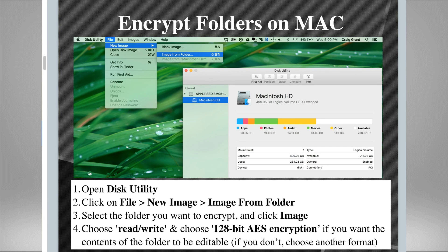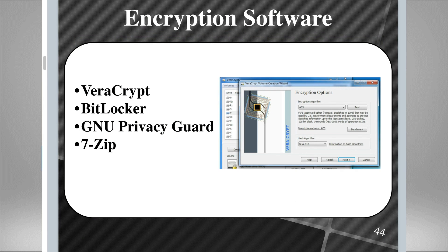The truth is, the encryption that comes for free in these programs and in the operating system is good, but not amazing encryption. More importantly, everyone has it, so hackers definitely do know how to get around it if they want to. So another option is to download a dedicated encryption program like VeraCrypt, BitLocker, GNU Privacy Guard, or 7-Zip. These are programs specifically just for encryption, and because they're not the ones that come in the operating system, they do offer a little bit better security. These are ones any individual person could use on their own devices.